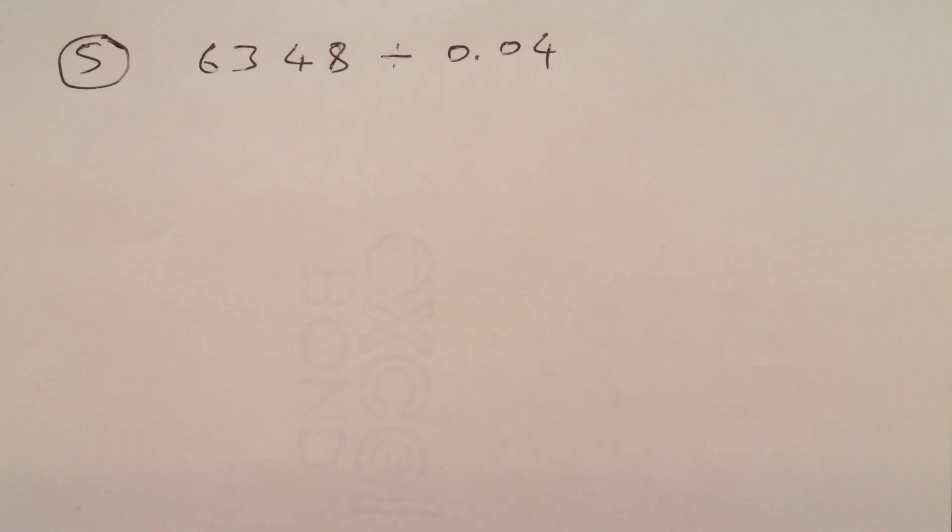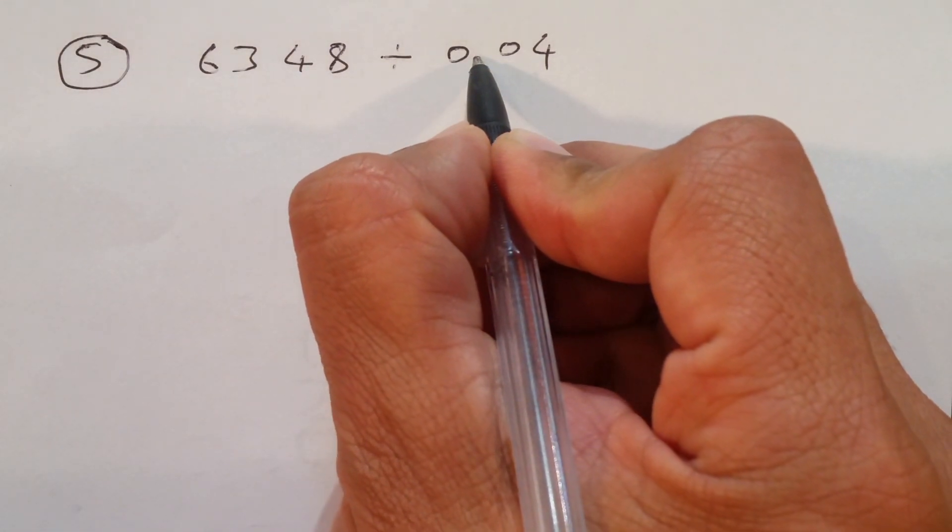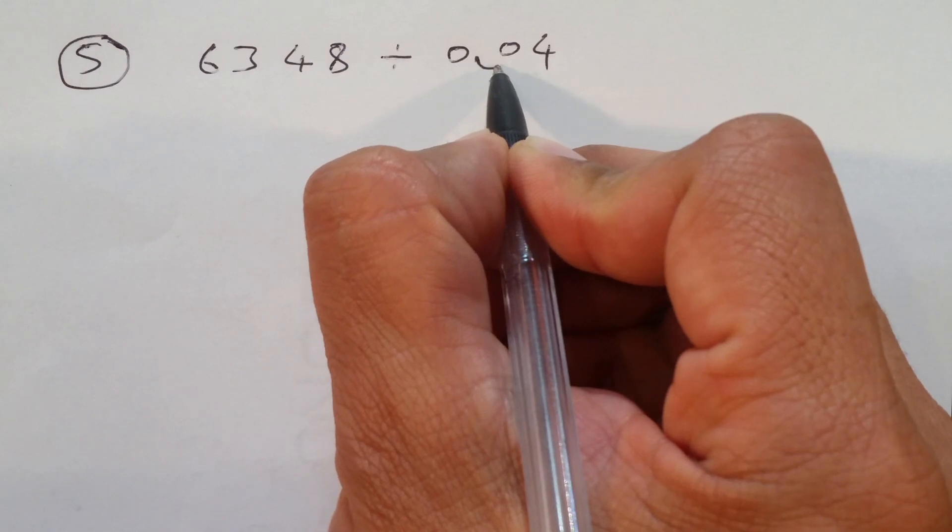Well, next again, a division question. So, 6348 divided by 0.04. Again, a decimal one. I'm going to give you a different trick in this question. Because like, if you see the first number, this is a complete whole number. And there's a decimal here. So, we will move the decimal now. We'll get rid of the decimal now. The first trick in the previous one. There's a second trick in the second question.